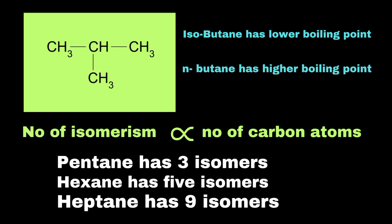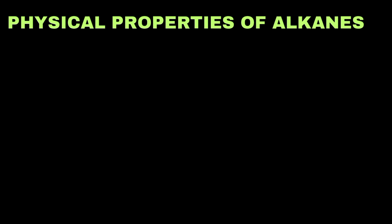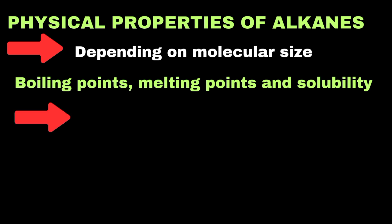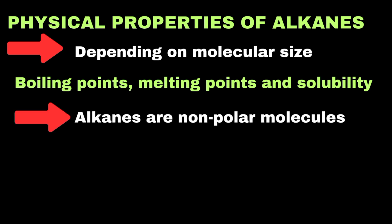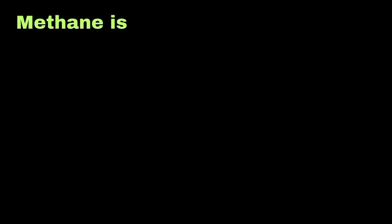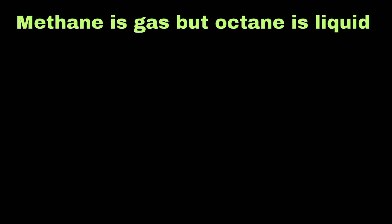Alkanes have specific physical properties that depend on molecular size and structure, including boiling points, melting points, and solubility. Since alkanes are non-polar molecules, their behavior is mainly influenced by weak London dispersion forces. The boiling and melting points of alkanes increase as the number of carbon atoms increases, because larger alkanes have more electrons and greater surface area, leading to stronger London dispersion forces. For example, methane is a gas at room temperature, but octane is a liquid.